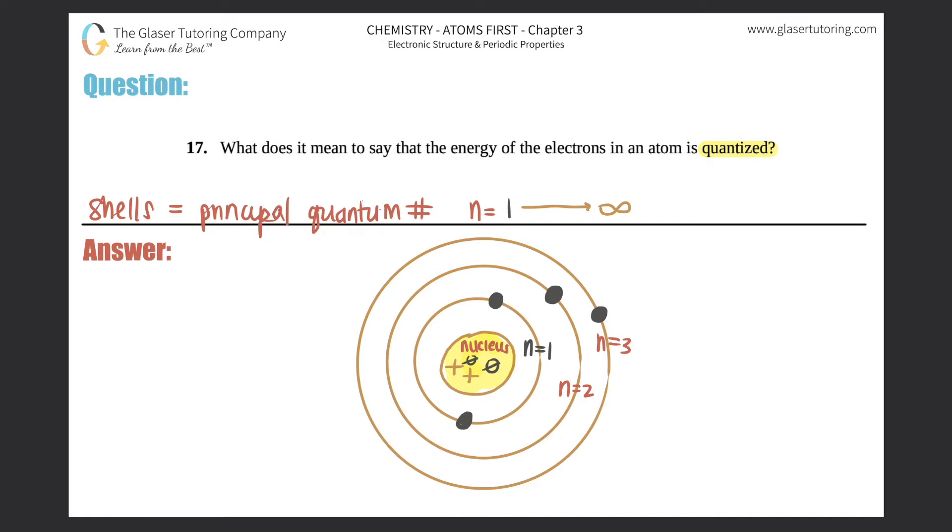But just know that the electrons can only live in these specific shells. Now the cool thing is that electrons can jump. This electron can maybe jump to the n=3 shell, and electrons that are here can jump back and forth.